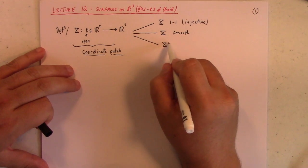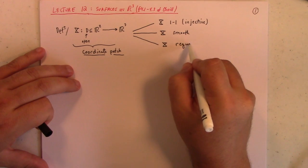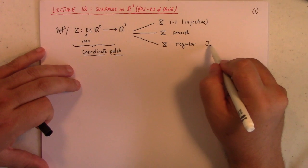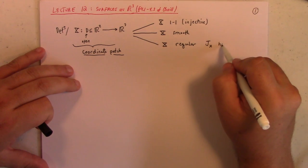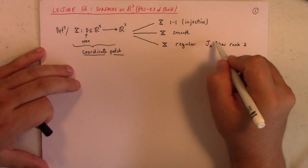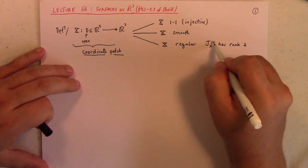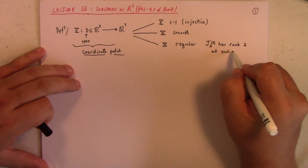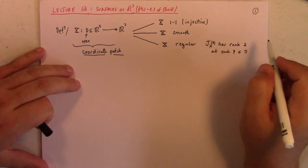It has to be smooth. That means you can take as many derivatives with respect to the Cartesian variables in the domain as you like. X has to be regular. Now, what that means is that if you look at the Jacobian matrix of X, it has rank 2, at each point.